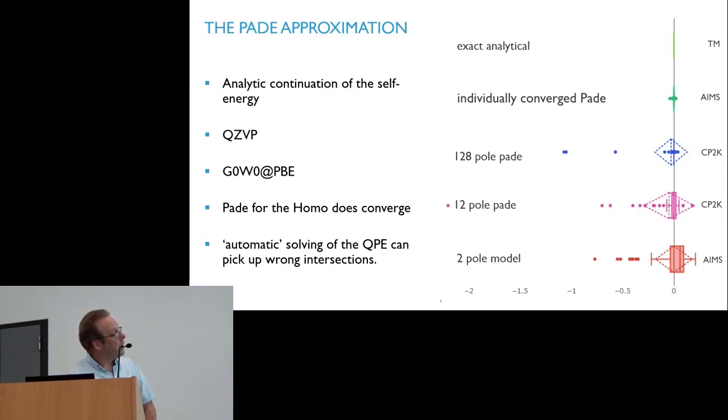As soon as you start to do things automatically, you start to have a little bit broader spread. If you only have a few poles you get even broader, and a two-pole model is obviously worst. So for solids that may sometimes work, but for molecules you really need a lot of Padé poles to get yourself energy correct.